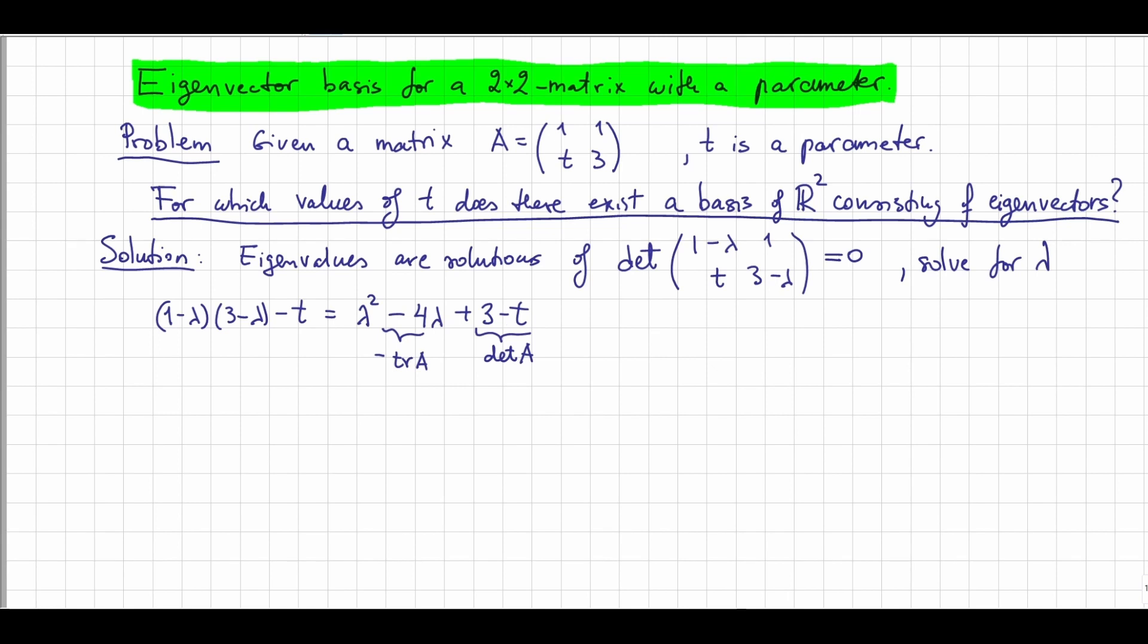So this is a quadratic equation, and we need to see when this has a solution. Notice, if it has no solutions, no eigenvalues, then there will be no eigenvectors. So we won't have a basis. For this to have a solution, we remember that for a quadratic equation to have a solution, we need to calculate its discriminant.